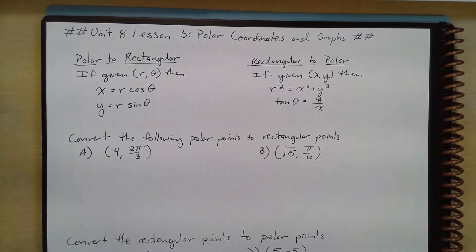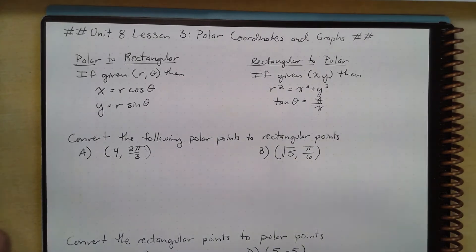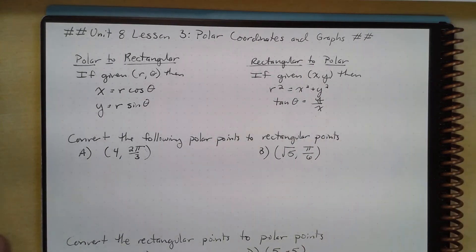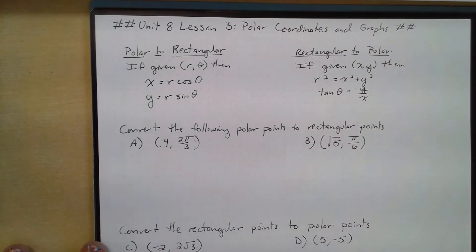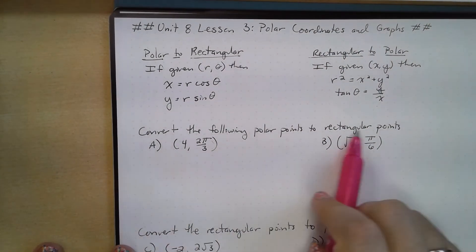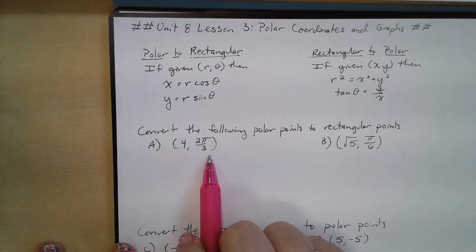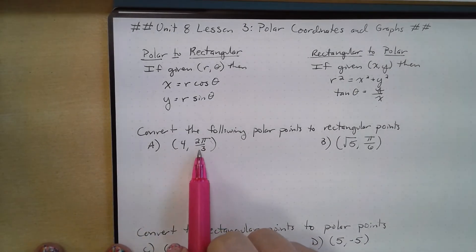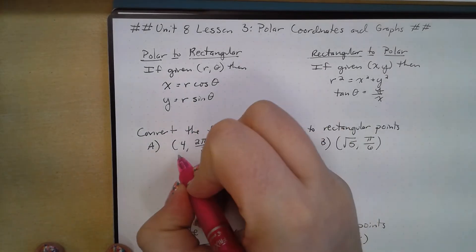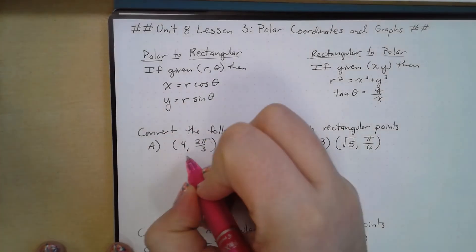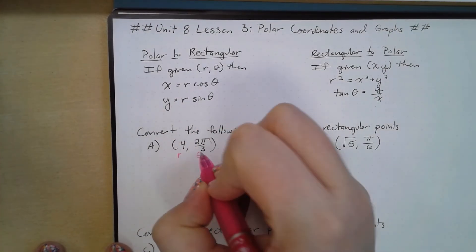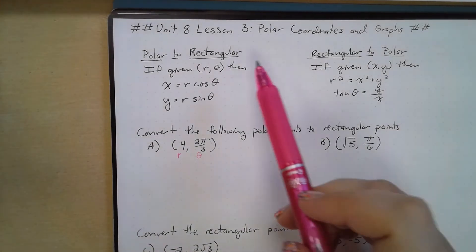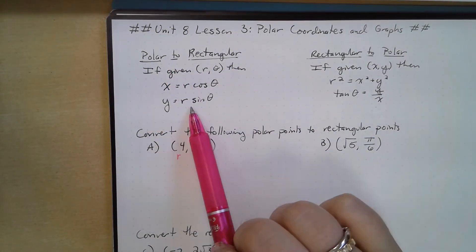First thing we want to talk about is converting polar coordinates to rectangular coordinates and rectangular coordinates to polar coordinates. This is actually much easier than it seems. We are asked to convert the following polar points to rectangular points. We have the point (4, 2π/3). So 4 is our r and 2π/3 is our theta, and we can use these formulas to convert them.